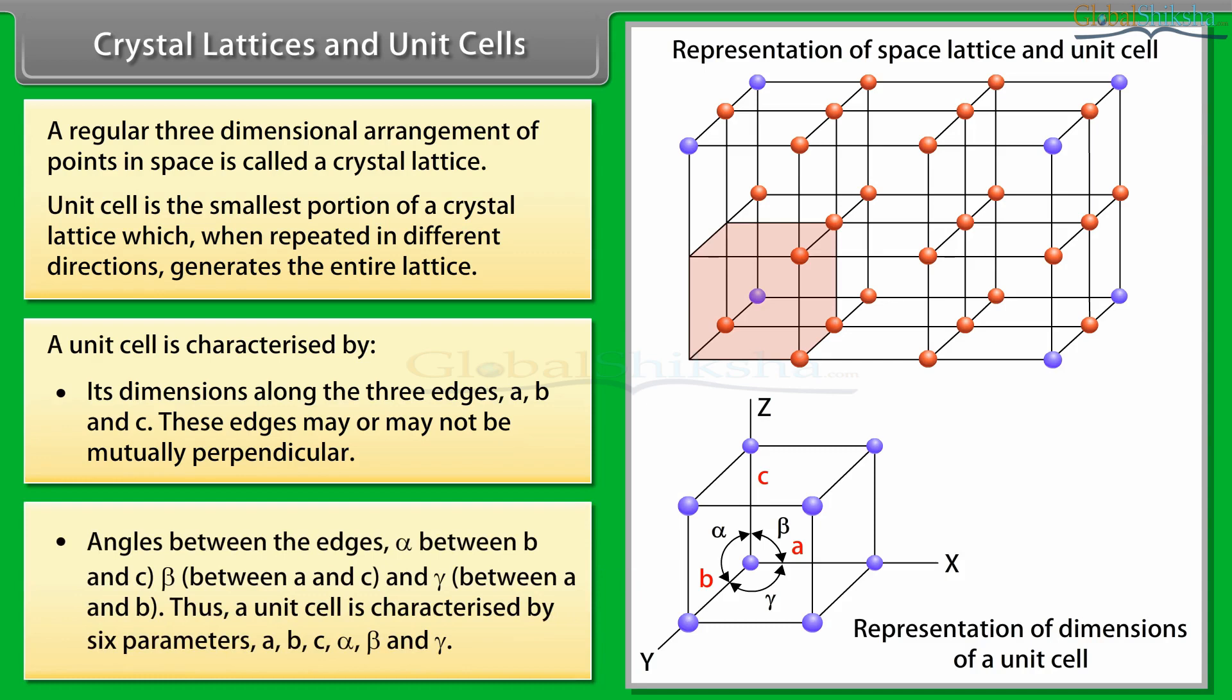It's also characterized by angles between the edges: Alpha between B and C, Beta between A and C, and Gamma between A and B. Thus a unit cell is characterized by six parameters: A, B, C, Alpha, Beta, and Gamma.